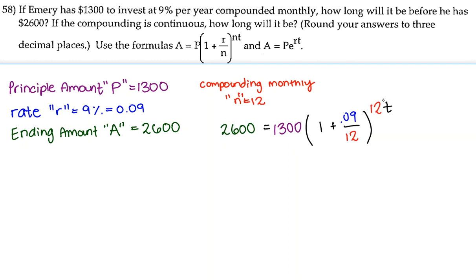Now let's solve for t. Let's divide both sides by $1,300. Now on the right-hand side, we have a base raised to the power of an exponent. And we need to get the t out of the exponent area. So in order to do that, we're going to take the ln of both sides.